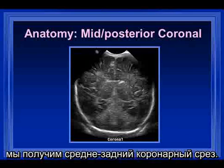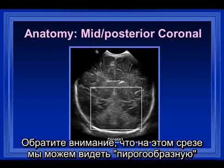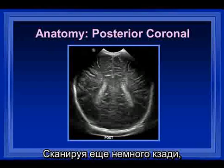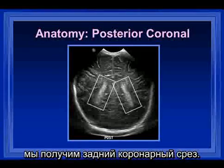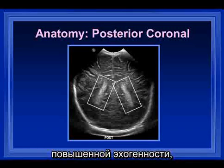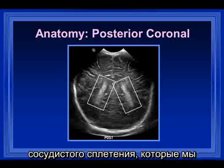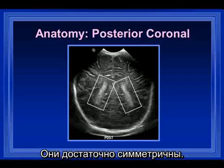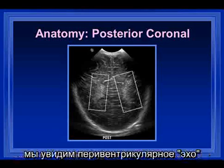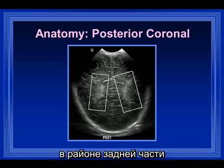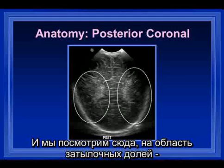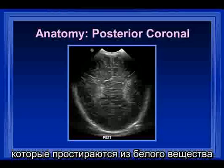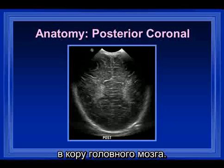A little bit more posteriorly we get to the mid-posterior coronal view. Note in this view the pie-shaped area of bright echogenicity representing the cerebellum. Further back at the posterior coronal view, we see bright areas of increased echogenicity that are the glomera of the choroid plexus, which are generally quite symmetric. Even further posteriorly, we see the periventricular blush around the posterior portions of the brain in the occipital lobes, representing vascular markings and neurons coursing from the deep white matter to the cortex.